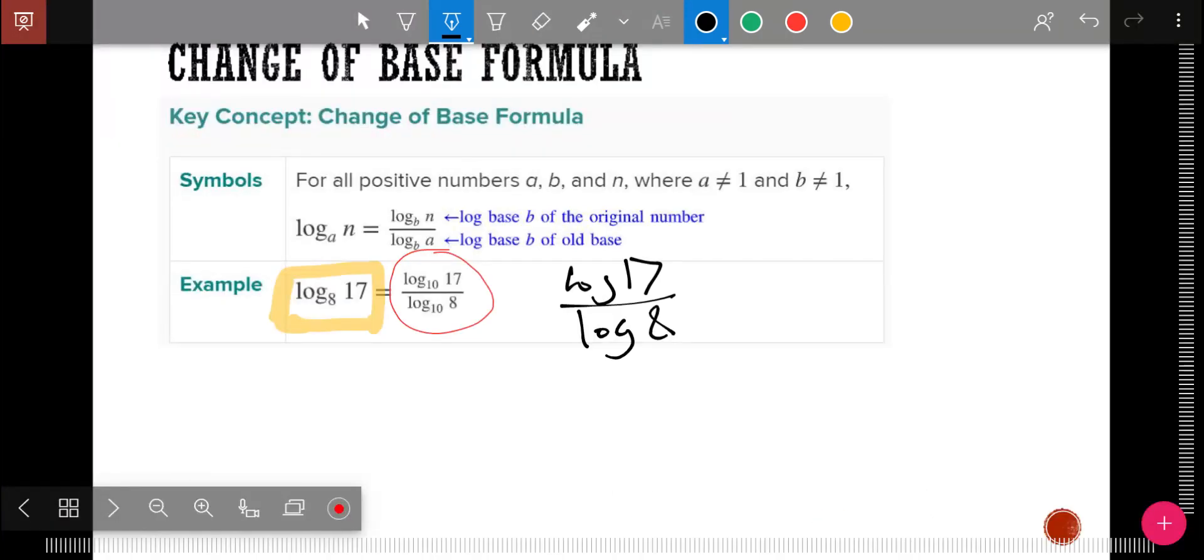Change of base formula. Change of base formula makes using a calculator easy. Now, if you have a graphing calculator, like a true TI-84 or something like that at home, you can find a button which allows you to put any base in log. However, if you're just using a regular calculator or a scientific calculator that doesn't have every feature, it'll have a log button. And so I can rewrite log base 8 of 17 as log 17 over log 8. It's called the change of base formula. I'm making them both base 10 so that I can type it into a calculator.